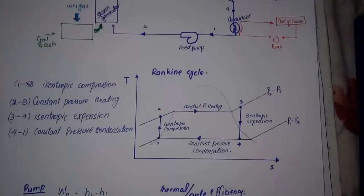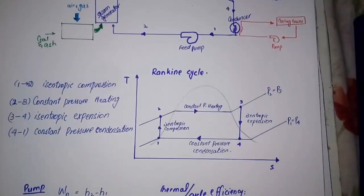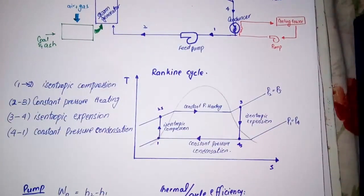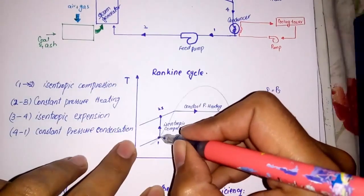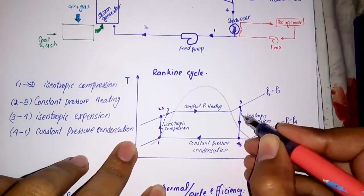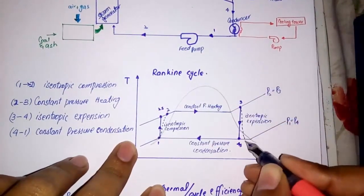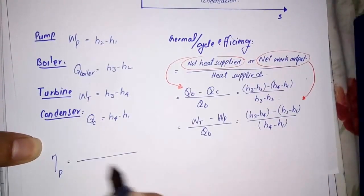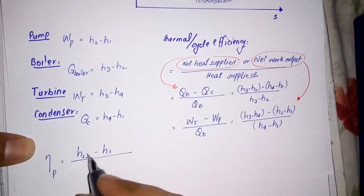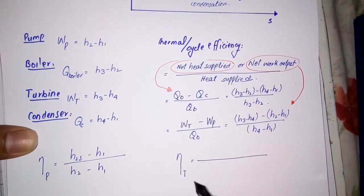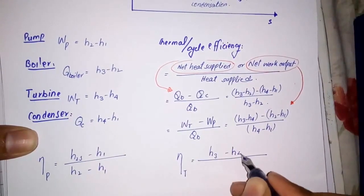Up till now we have discussed the Rankine cycle, which is an ideal cycle. In reality, in any process entropy cannot be constant — it actually increases. There is a difference between the isentropic process and the real process, so here is the isentropic efficiency formula for the pump and turbines.